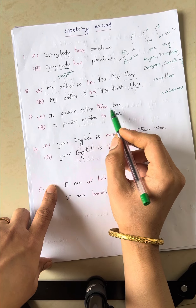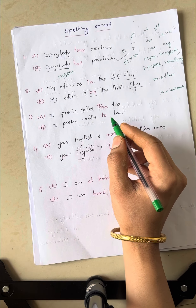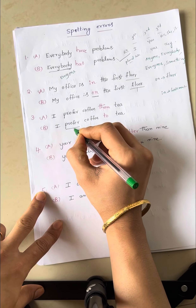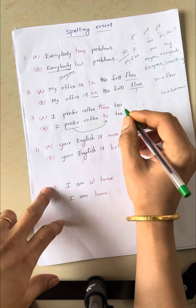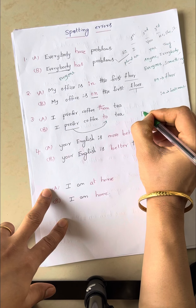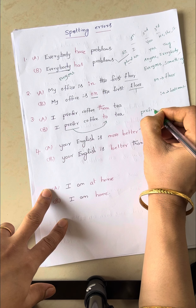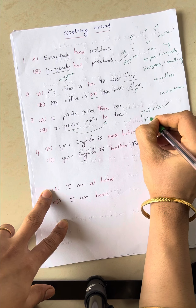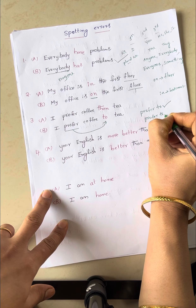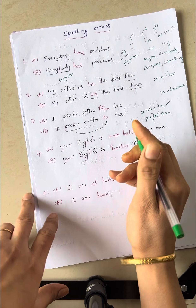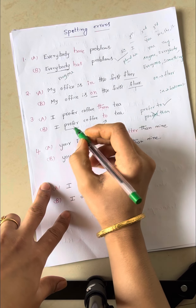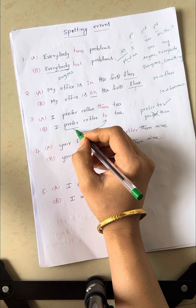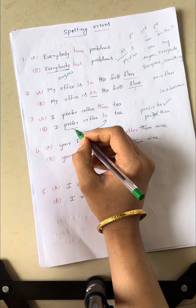I prefer coffee than tea. I prefer coffee to tea. Which one is correct? Prefer always goes with the preposition to. Prefer to is the correct one. Prefer than is wrong. Prefer means you like something or someone compared to another.